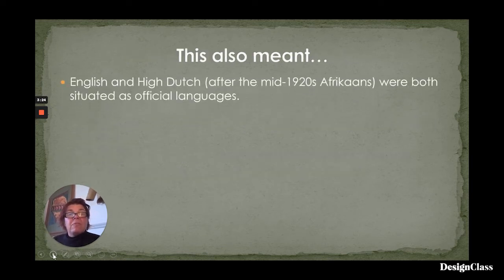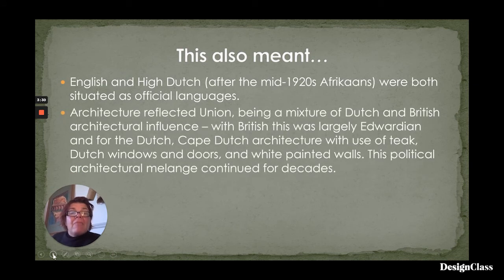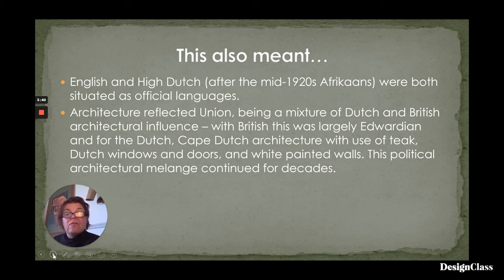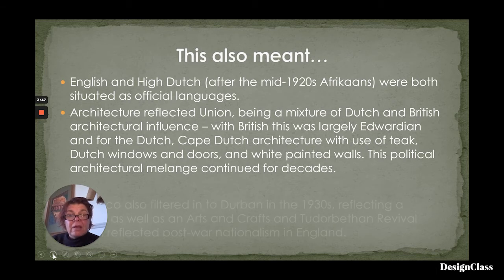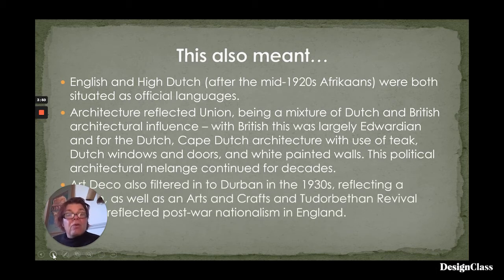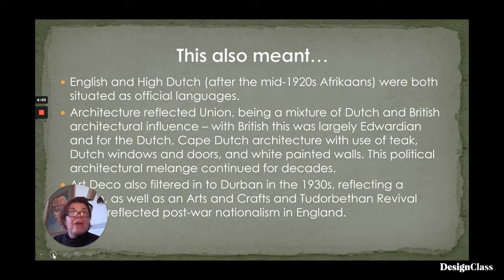English and High Dutch were both established as official languages. The architecture reflected Union being a mixture of Dutch and British architectural influences — with British largely being Edwardian, and for the Dutch, Cape Dutch architecture with teak Dutch windows and doors and white painted walls. This political architectural melange continued for decades. Art Deco also filtered into Durban in the late 1930s, reflecting a building boom, as well as an arts and crafts and Tudor Bethan revival, reflecting significant post-war nationalism in England — and so that very strong connection between the province of Natal and England remained.